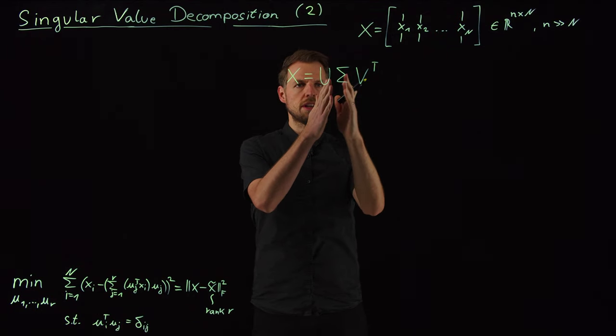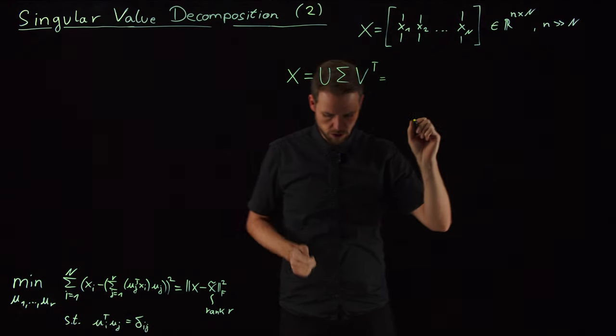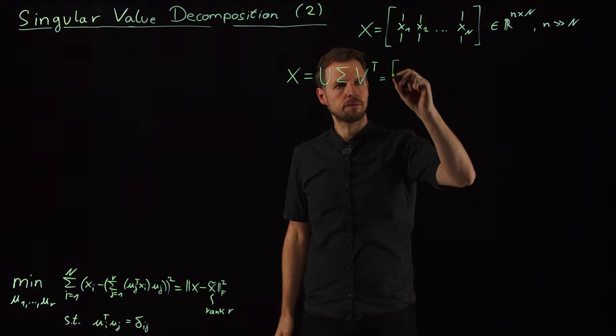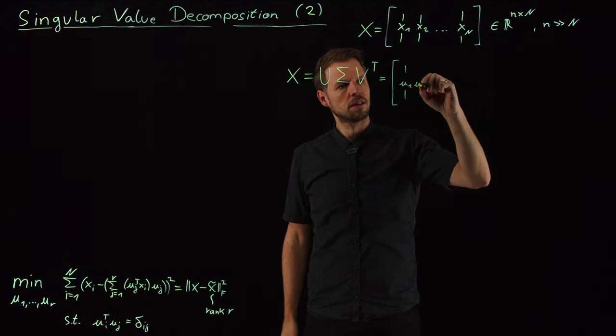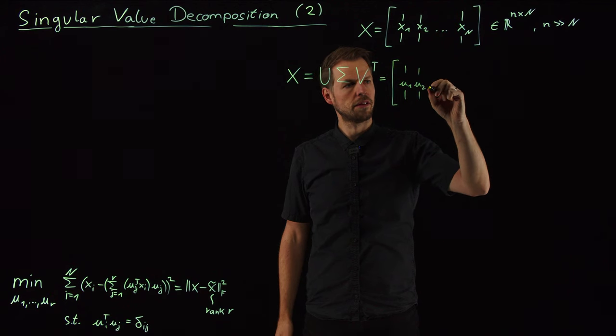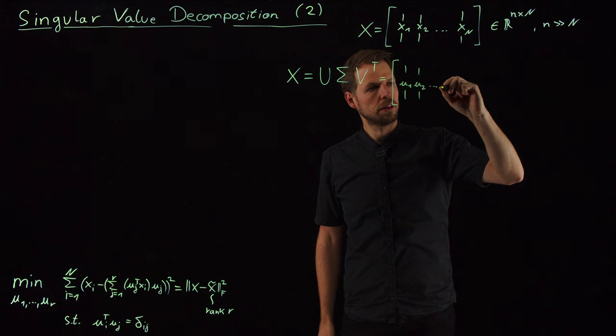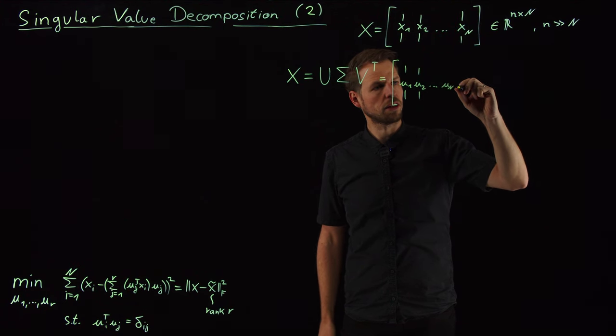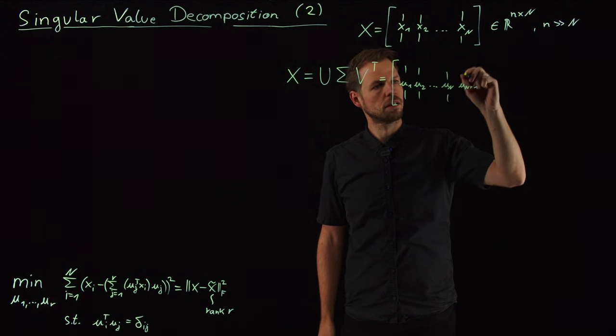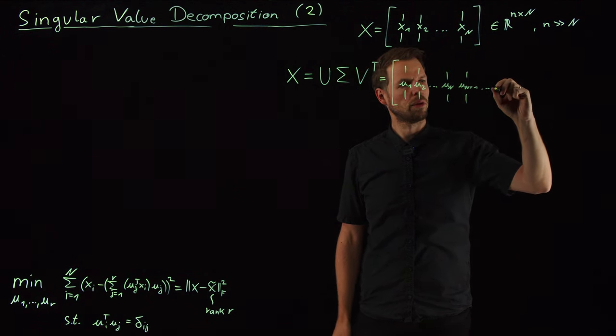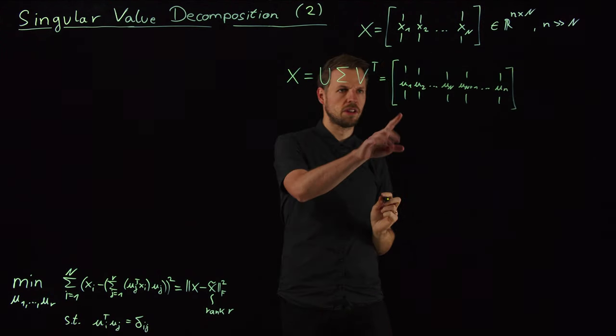And so, we have this problem of a U matrix, a sigma matrix, and a V matrix, and they look as follows. So, the U matrix is U1, U2, I'm going to make it a little bit more detailed here, to UN, but it goes on, UN plus 1, so we arrive at U lowercase n. So, this is the U matrix.